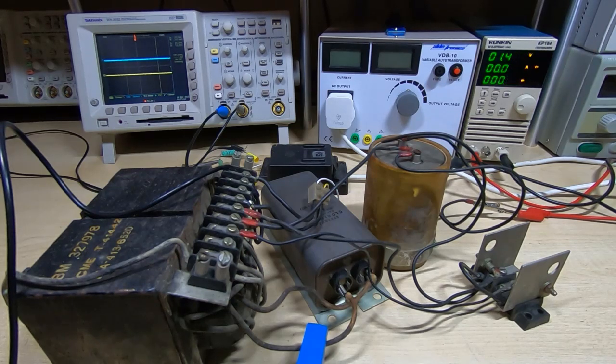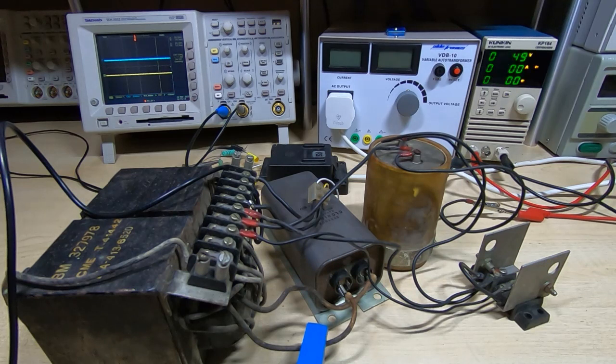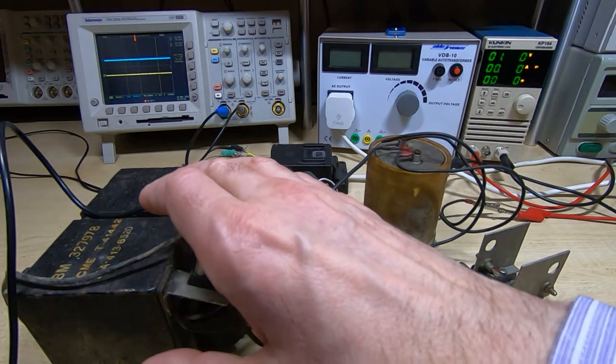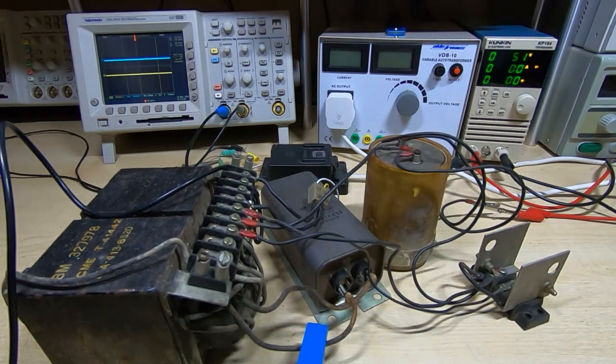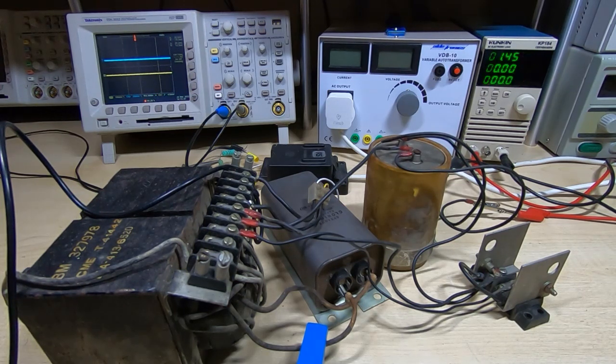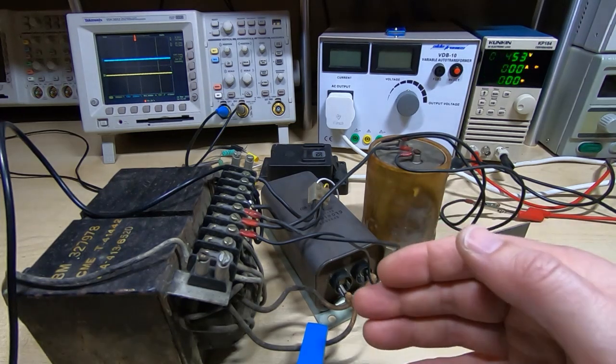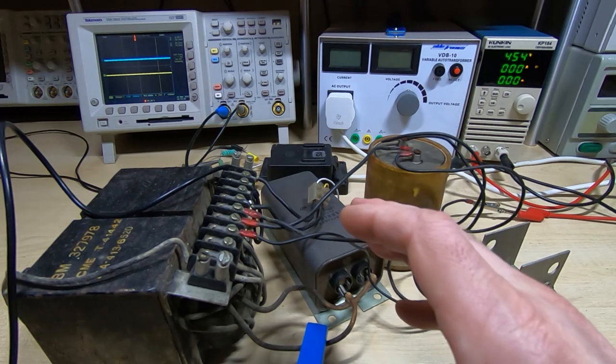But before I do that I just want to have a quick look at the way that the secondary part of the transformer is driven into saturation. In the previous video I explained that the primary part of the core was running in the linear region of the flux curve and that the secondary part of the core was being driven into saturation intentionally. And that flat portion of the saturation curve is the key to the self-regulation in these devices. But in this video I want to try and explain how that discontinuity between the two parts of the transformer is produced.